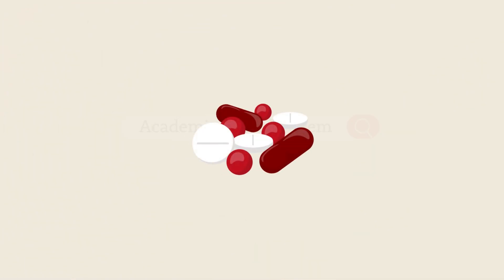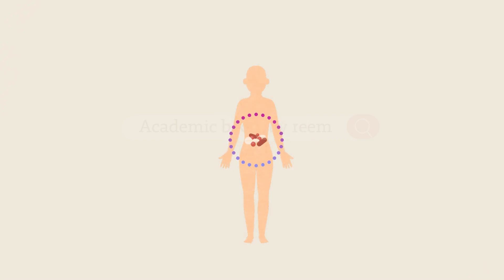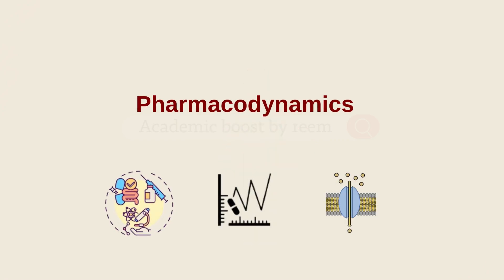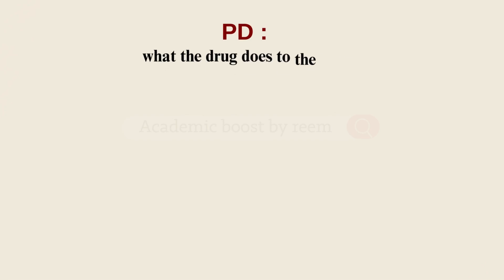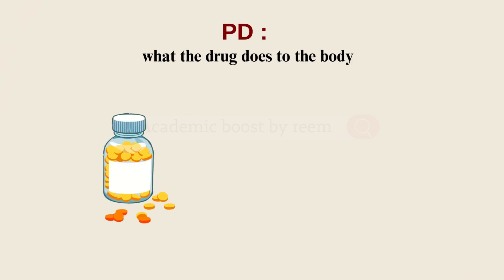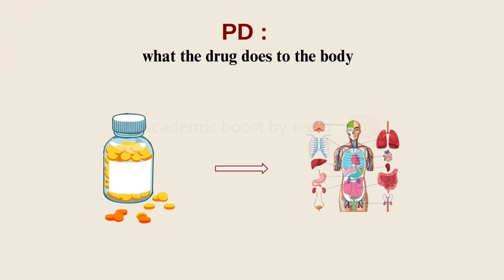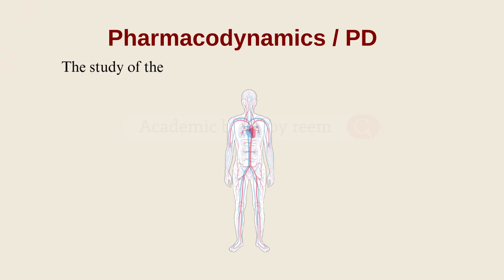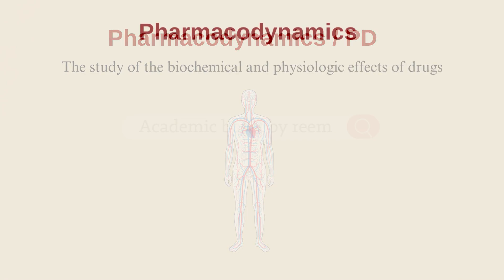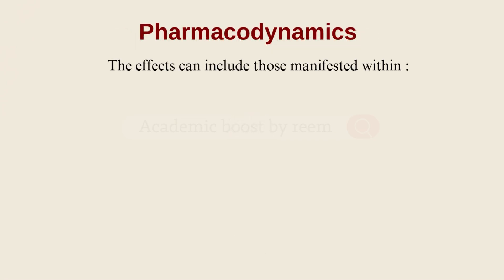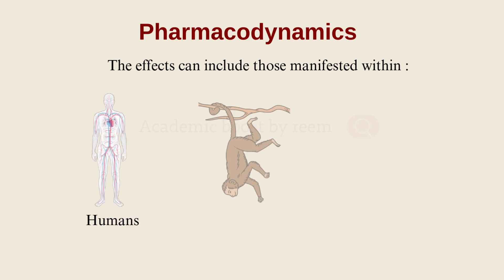Ever wondered how medicines actually work once they enter the body? That's what pharmacodynamics is all about. Pharmacodynamics explains what the drug does to the body — how a particular drug affects our body. Pharmacodynamics can also be defined as the study of the biochemical and physiological effects of drugs.